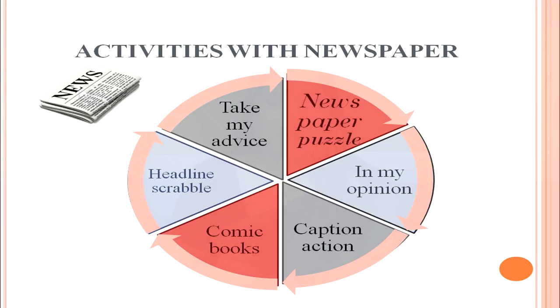The fifth activity is headline scrabble — students cut the words and even the individual alphabets from newspaper headlines, then form new headlines from those words and letters. The sixth and last activity is 'Take My Advice' — there is a column in the newspaper where people share their problems and receive advice. You read that column with children and ask them to give their own advice for that particular problem. These are the six activities with newspaper.